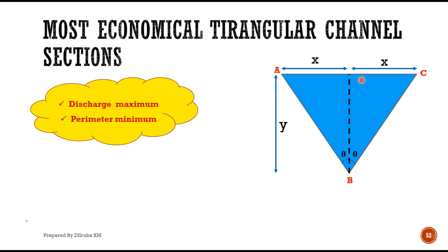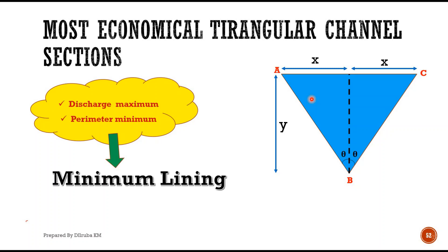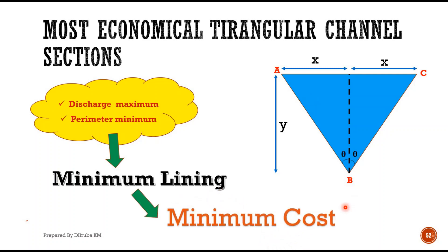We know the condition for a channel section to be most economical is that discharge should be maximum and we should have less cost. To reduce the perimeter, in the triangular channel section we keep the area constant. When you reduce the perimeter, the lining required will get reduced, giving minimum lining requirement and reduced cost. So we are going to reduce the perimeter to obtain maximum discharge for a given area.